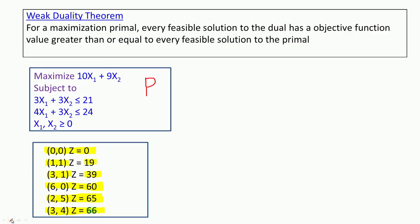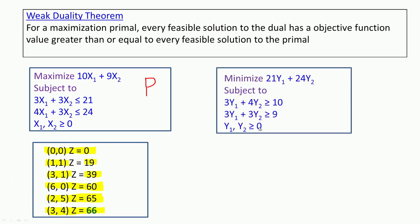Now we write the dual of this problem. There are two constraints in the primal, so the dual will have two variables. The dual is: minimize 21Y1 + 24Y2, subject to 3Y1 + 4Y2 ≥ 10, 3Y1 + 3Y2 ≥ 9, and Y1, Y2 ≥ 0.